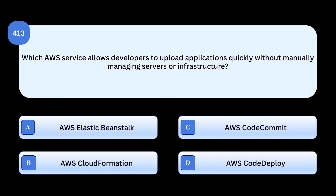Correct answer: AWS Elastic Beanstalk. Elastic Beanstalk automatically handles capacity provisioning, load balancing, and scaling, so developers can just upload their code. Why others are incorrect: AWS CloudFormation defines infrastructure as code, not direct app deployment. AWS CodeCommit is a source control service, not app deployment. AWS CodeDeploy automates deployments but requires infrastructure management.